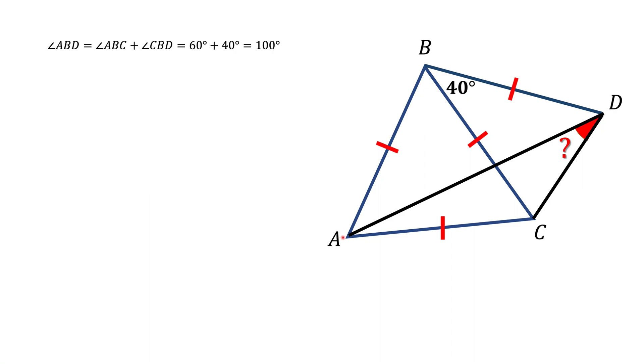The next thing, notice that triangle ABD is an isosceles triangle, one angle of 100 degrees. The other two should be congruent to each other, and each one is going to be 40 degrees.